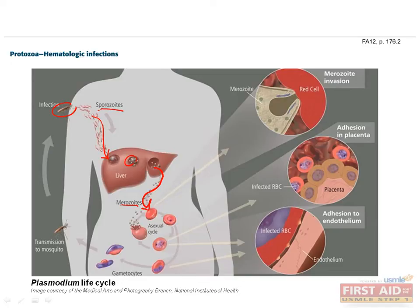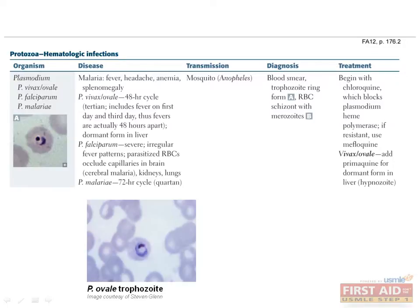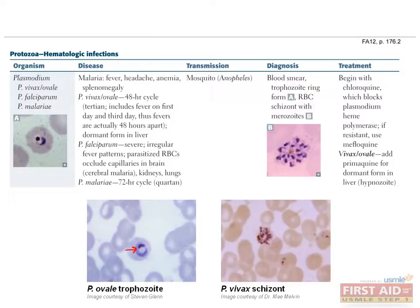The merozoites are now able to infect red blood cells, where they develop into ring forms known as trophozoites and schizonts. Sexual forms known as gametocytes are also produced, which can continue the life cycle when taken up by another mosquito. Plasmodium infections are diagnosed by examination of blood smears, looking for the classic ring form of the Plasmodium trophozoite. Blood smear can also show the mature schizont form containing 12 to 24 merozoites. Chloroquine used to be the first-line agent for prophylaxis and treatment of malaria; however, in cases of resistance, mefloquine is used as an alternative for chloroquine-resistant malaria.